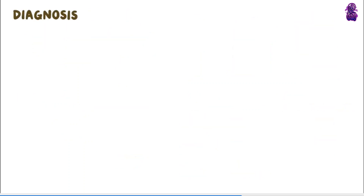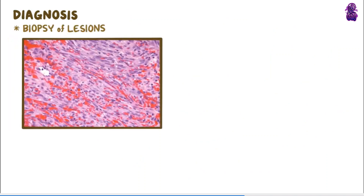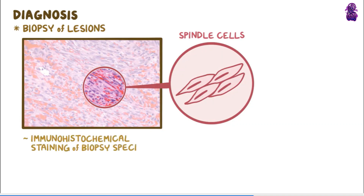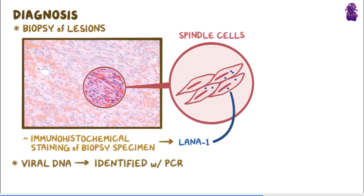Diagnosis of Kaposi's sarcoma requires a biopsy of the lesions. Microscopic examination can show tumor cells with a characteristic abnormal elongated shape called spindle cells, and immunohistochemical staining of biopsy specimens can detect the presence of LANA1 within the spindle cells, confirming the diagnosis. Finally, viral DNA can be identified with PCR.